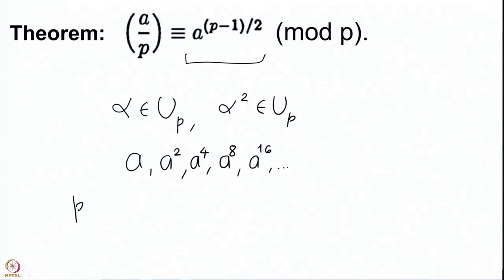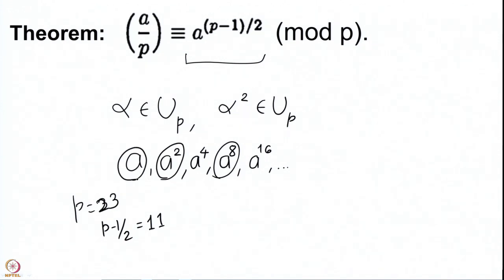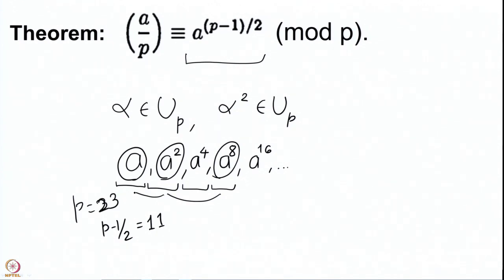For instance, if p is 23 then (p-1)/2 is 11, and we have to compute a^8 times a^2 times a. The product of these three elements gives a^11. So we compute a, compute a squared, compute its square giving a^8, and take the product of these three — that gives a^11 in just a few computations. This is the way we are going to do the computations; here we will do them by hand but follow the same method.